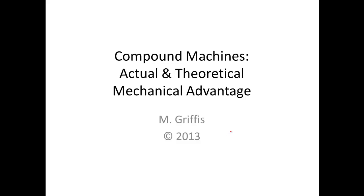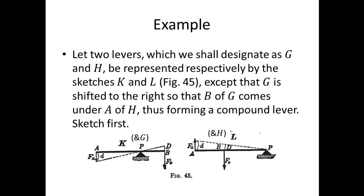Today I want to talk about compound machines — the actual and theoretical mechanical advantage. Here's an example: let two simple levers, G and H, be of type K and L respectively, except that the output of G at point B is going to be the input force at point A for lever H, thus forming a compound lever.